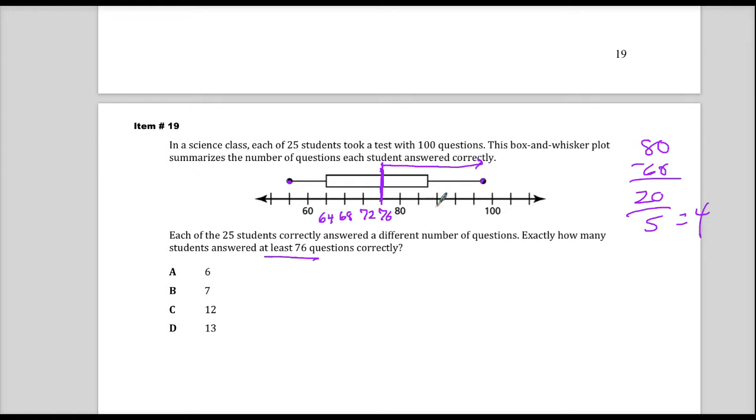Now the other annoying part about this is they give you a weird number like 25. So 1, 2, 3, 4, 5, 6, 7, 8, 9, 10, 11, 12, 13, 14... I even ran out of space just writing it.